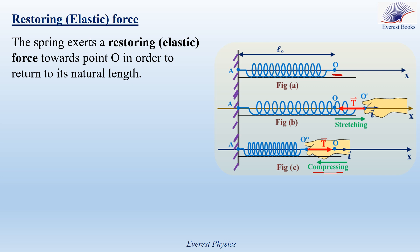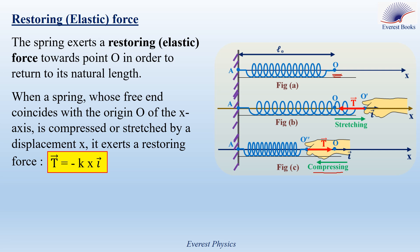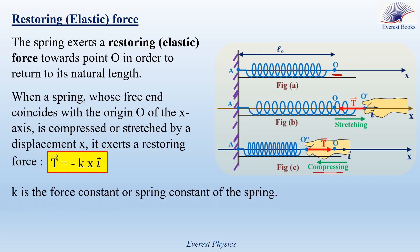The spring exerts this restoring force in order to return to its natural length. The expression of the elastic force is F = −KXi, where K is the force constant or spring constant, sometimes called the stiffness, and i is the unit vector along the x-axis. X is the elongation or compression of the spring.